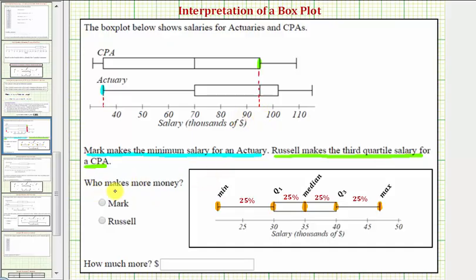The first question is who makes more money? We can see that Russell makes a lot more money than Mark, so our answer here is Russell.